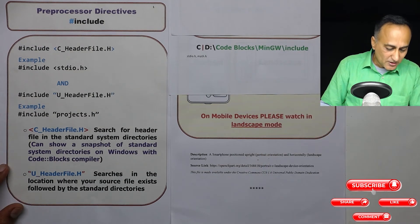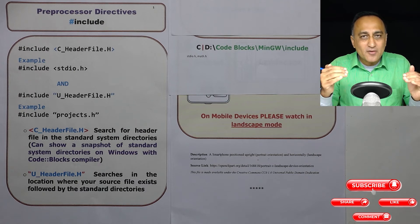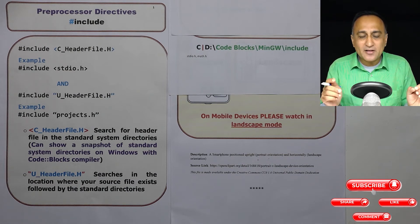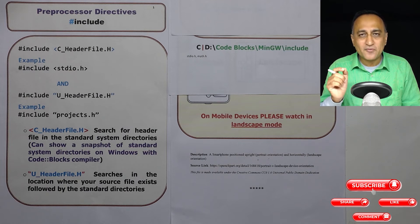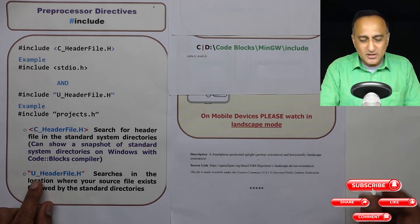Now, suppose as a user you have created header files — that means your 10 people in the project created certain code and you want to inform the compiler that you are going to use these particular functions. Since you have not written the code for these functions, the linker will join the code you have written with the functions' code developed by these 10 people. So the basic job of the header file is to inform the compiler that you are including or using certain library functions which may have been developed by another team member or provided by C. The compiler does not need to worry about finding the code because the linker at a later stage will join your code with the library code.